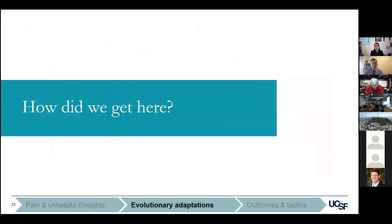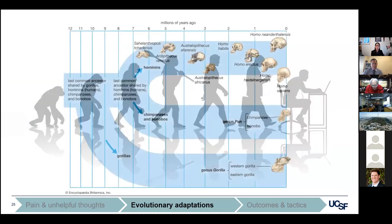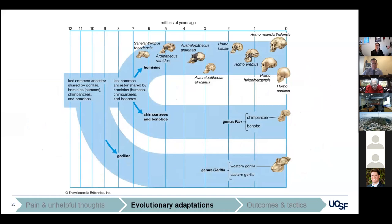Now that we understand how we think, let's review how we got to where we are today. We diverged from chimpanzees, our closest living ancestor, about 7 million years ago. Obligate bipedal gait likely first developed about 4 to 5 million years ago and continued to evolve over the next 3 million years. Anatomically modern humans, the species Homo sapiens, came into existence about 300,000 years ago. A number of key musculoskeletal adaptations occurred throughout this process.